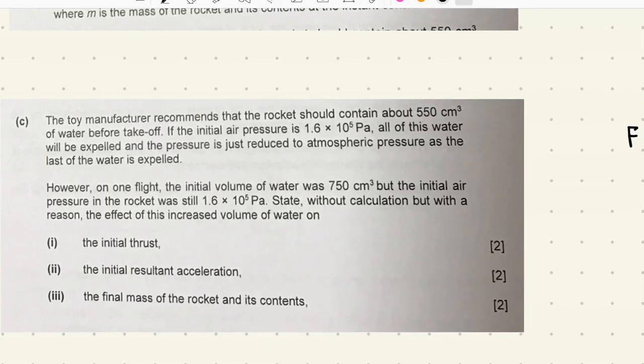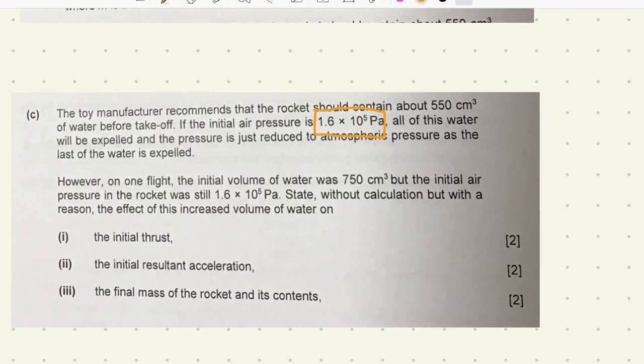Question C is a theoretical question. The toy manufacturer recommends that the rocket should contain about 550 cm³ of water before takeoff. If the initial air pressure is 1.6 times 10⁵ pascal, so 1.6 times the atmospheric pressure, all of this water will be expelled and the pressure is just reduced to atmospheric pressure as the last of the water is expelled. However, on one flight, the initial volume of water is 750 cm³, but the initial air pressure was still 1.6 times 10⁵. State without calculation, but with the reason, the effect of this increased volume of water on the initial thrust.